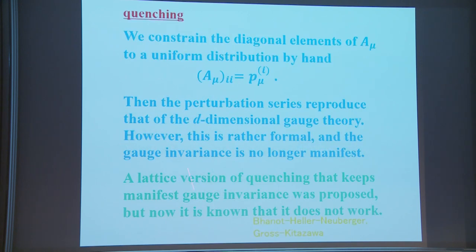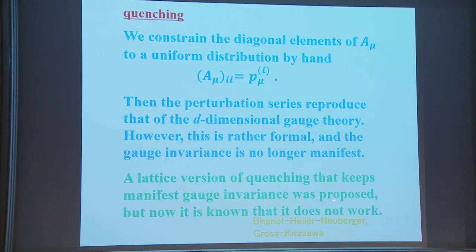The second method is called quenching. We constrain the diagonal elements of A_μ to a uniform distribution by hand. Then the perturbation series reproduces that of the d-dimensional gauge theory. However, this is rather formal, and gauge invariance is no longer manifest. A lattice version of quenching that keeps manifest gauge invariance was proposed, but it is now known that this doesn't work.